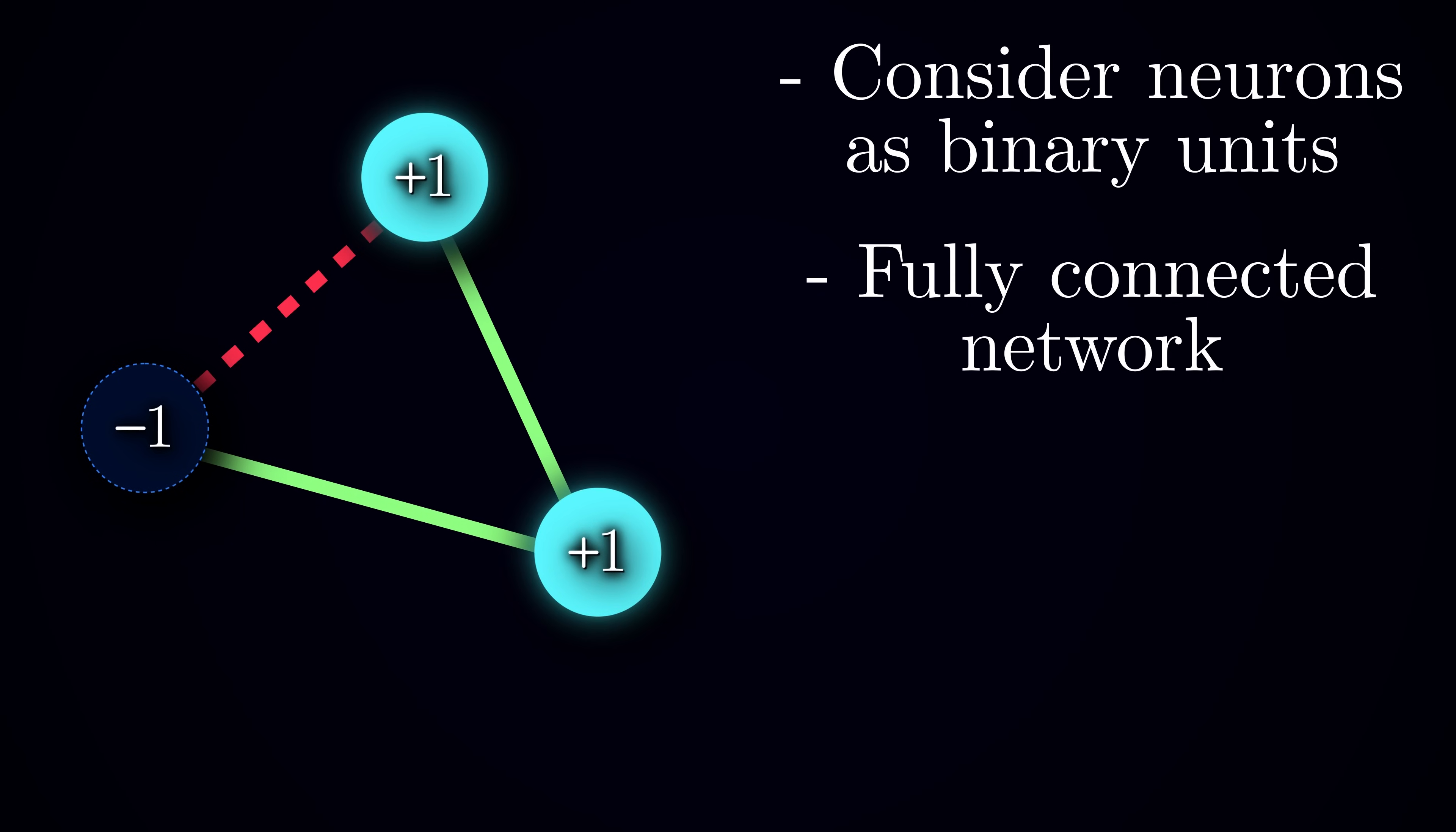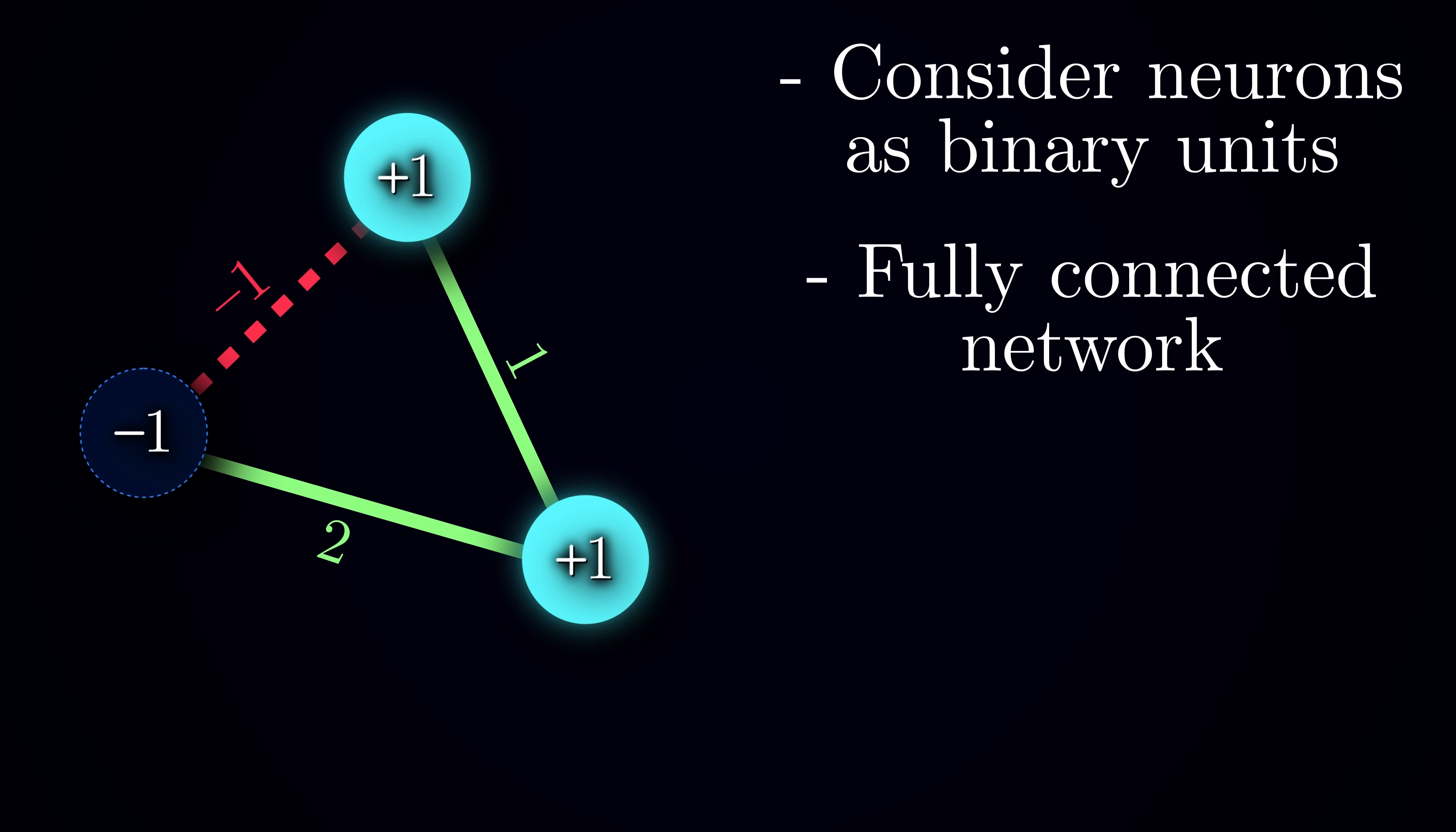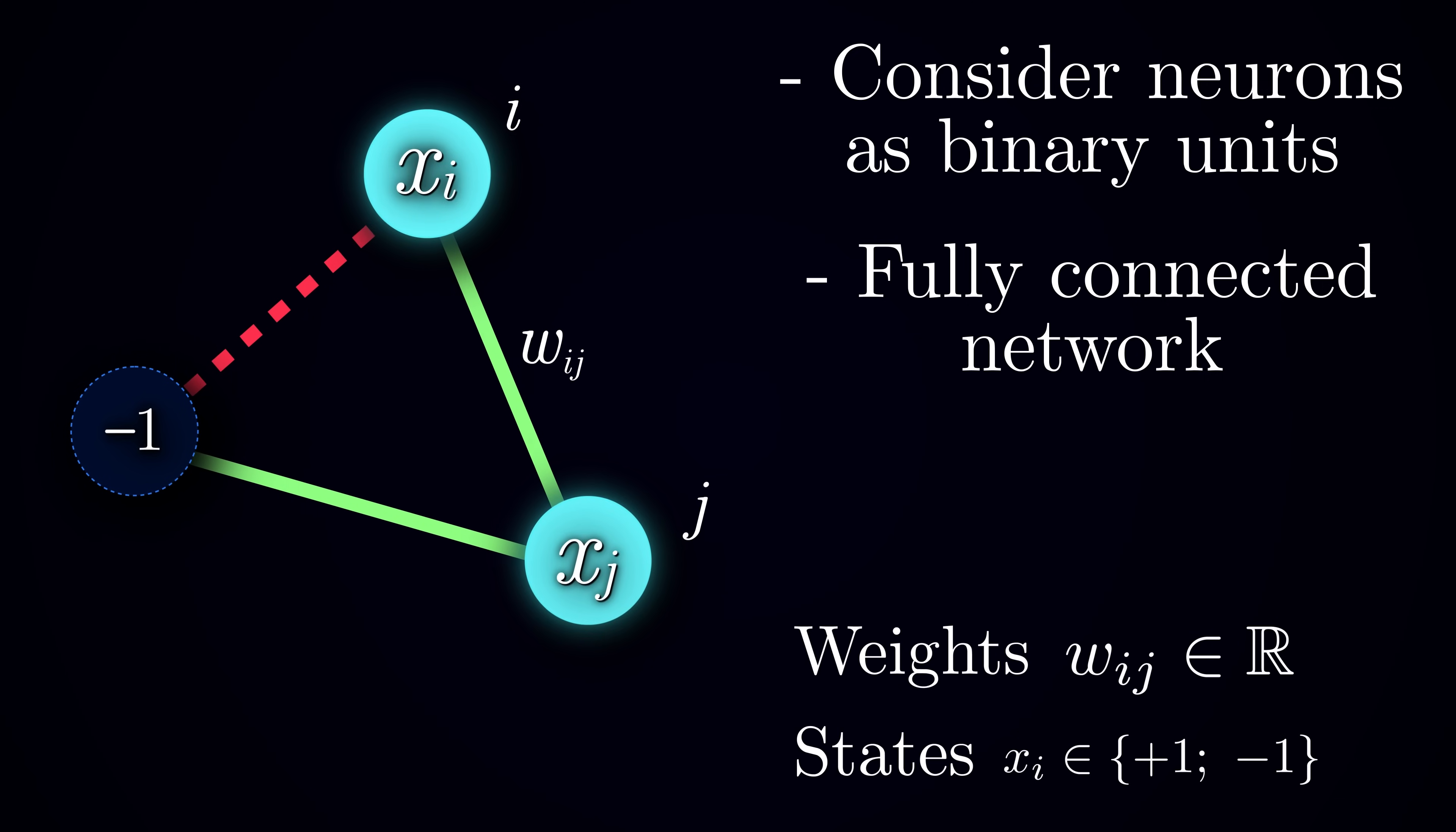We'll focus on the fully connected network, where each neuron has connections to every other neuron. These connections have weights associated with them, real numbers that signify the strength of coupling between the corresponding pair of neurons. For a pair of units i and j, we denote the connection weight between them as wij, and the states of neurons themselves as xi and xj.